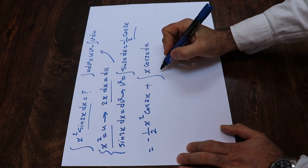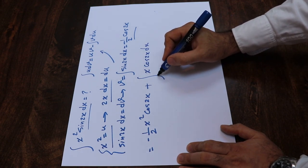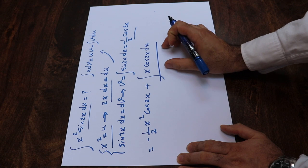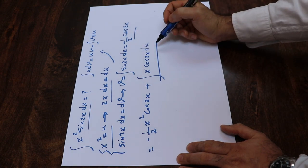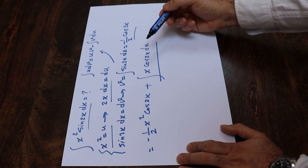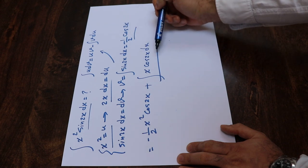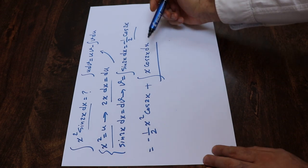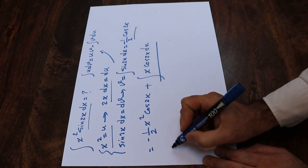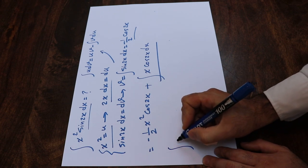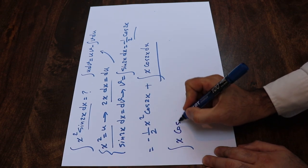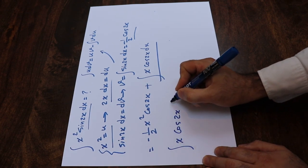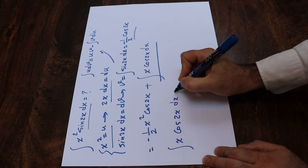So now you need to calculate this integral, and you can do so using the formula for integration by parts. In other words, you need to apply this formula one more time. The question now is how to calculate the integral of x cosine(2x) dx.